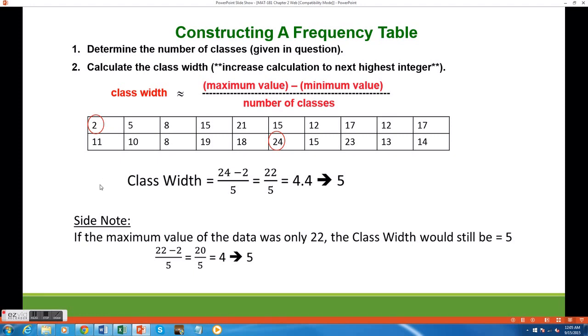In the side example, I did a hypothetical calculation where the largest data value was only 22. The result of the class width calculation was 4, but I still need to increase that number to the next highest integer. So the final answer is going to be 5. The reason why we do this is so that we can create 5 equally spaced data intervals while keeping those intervals as small as possible.